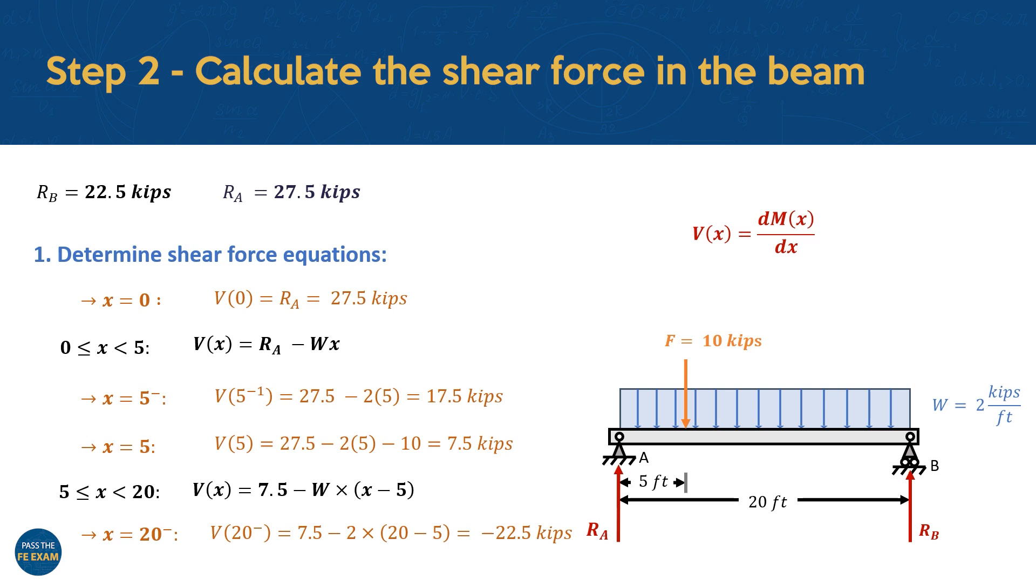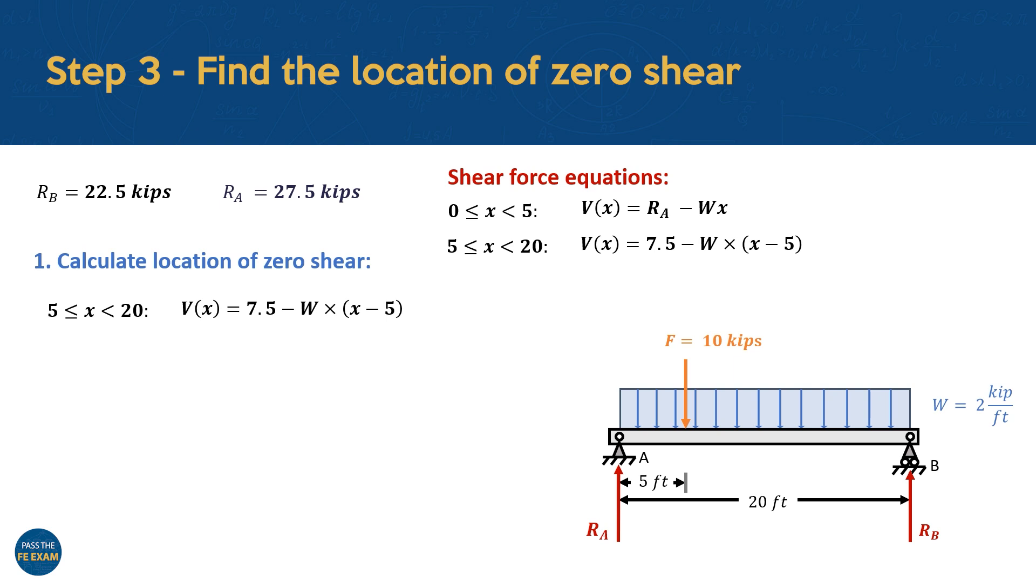To find the exact location of this point, we'll use the equation we derived for this section of the beam. Into this equation, we substitute the shear as zero, the distributed loading w as two, and we rearrange the equation solve for x. In doing so, we find the location at 8.75 feet.